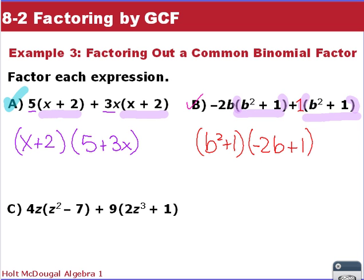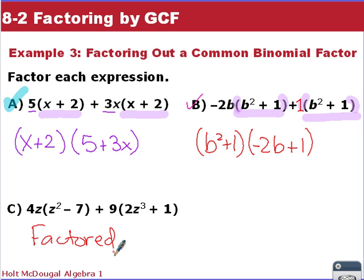For example C, we have (z² - 7)(2z³ + 1). There are no common factors here — this is already factored and you cannot factor it further. We're done.